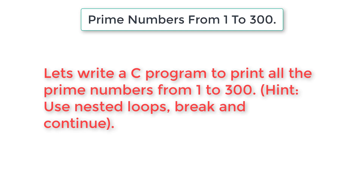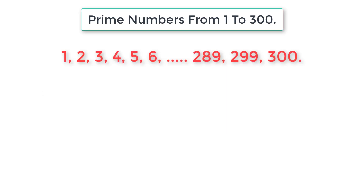So what is a prime number? A prime number is a natural number greater than 1 which has no positive divisors other than 1 and itself. In our program we need to print all the prime numbers between 1 and 300. Note that 1 is neither a prime number nor a composite number, so we need to handle that in our program.